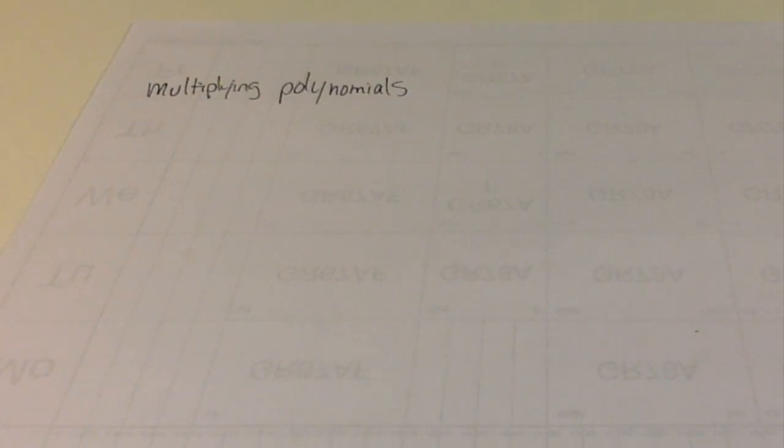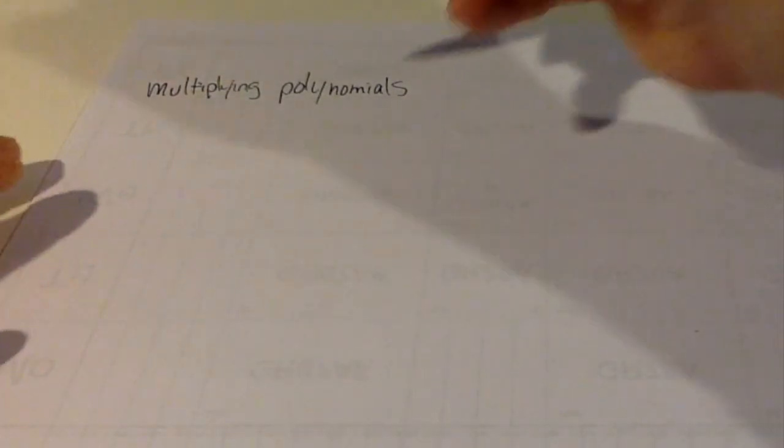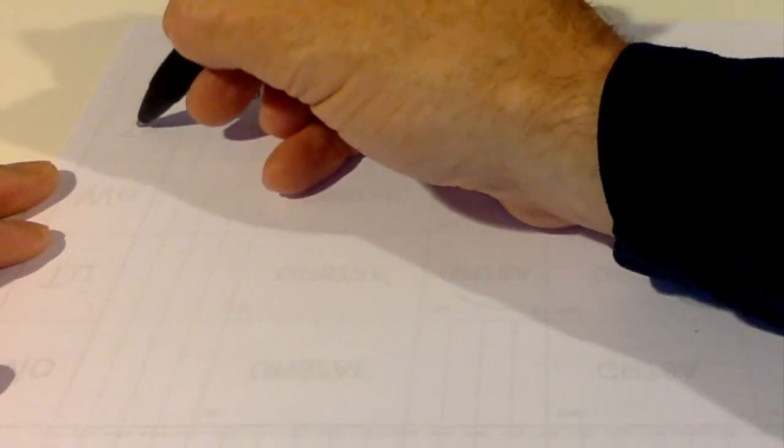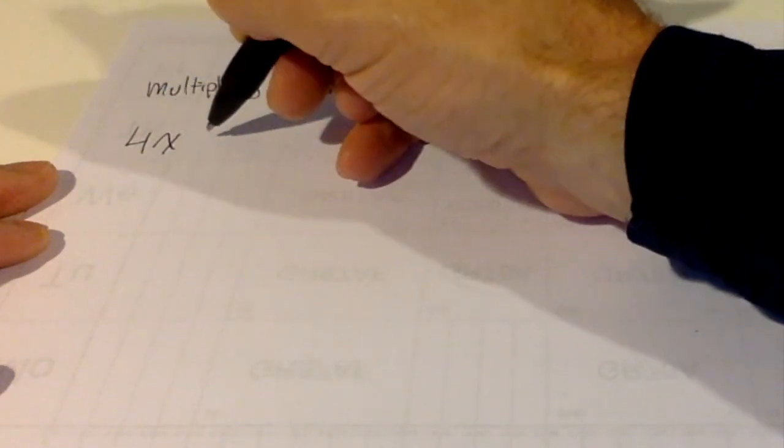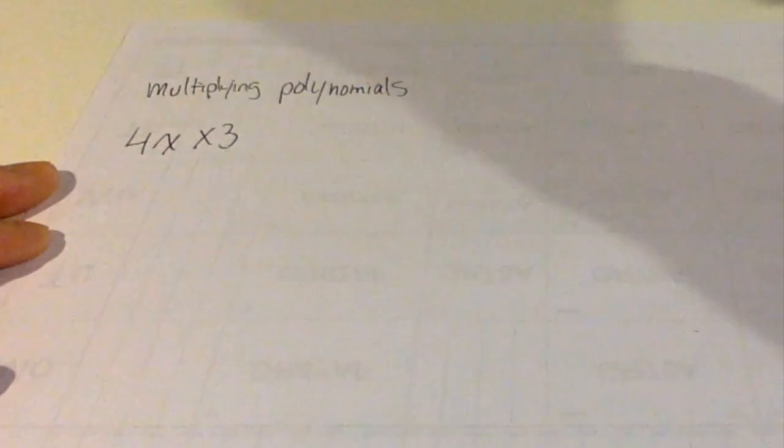Let's look at multiplying polynomials. So let's say you've got an expression like 4x times 3.